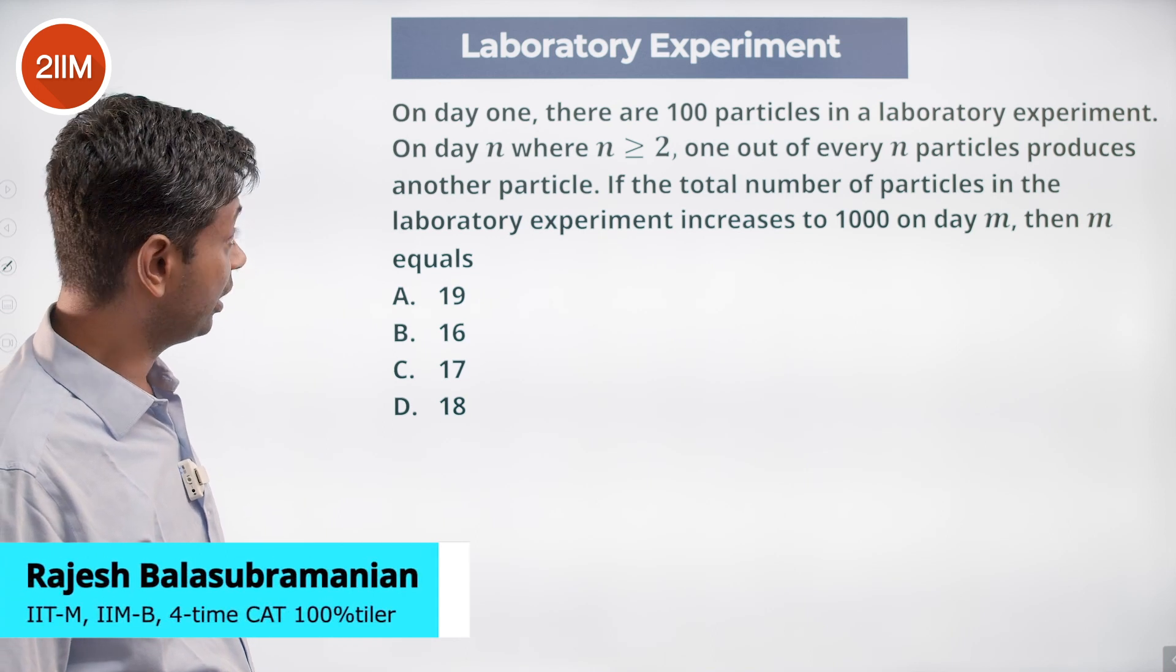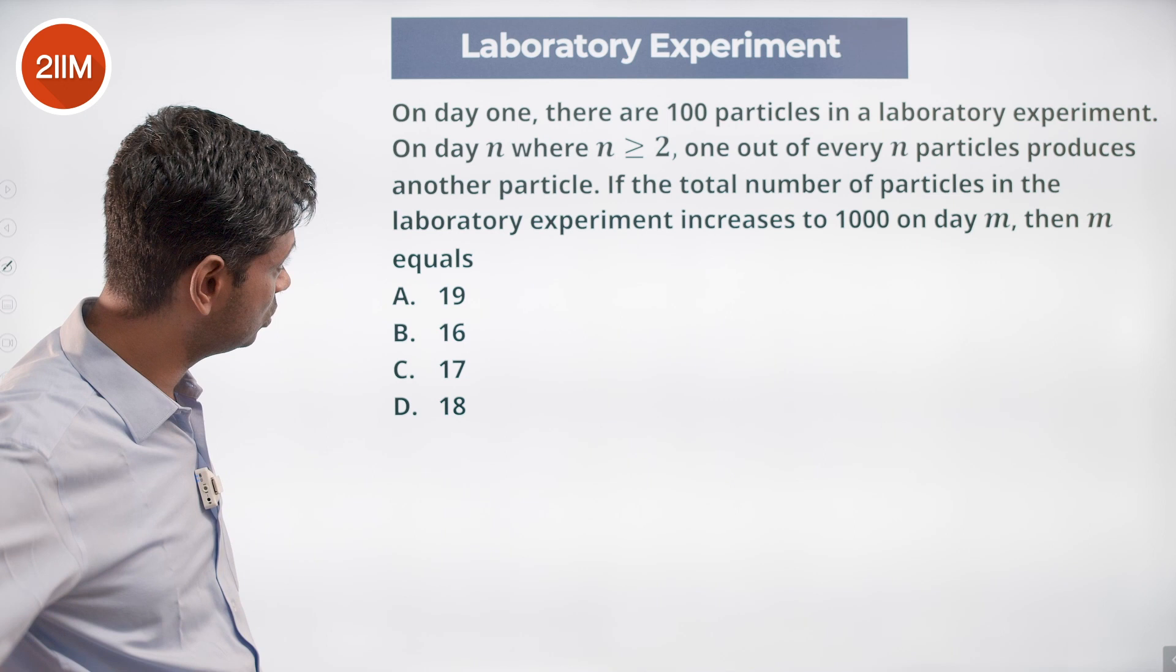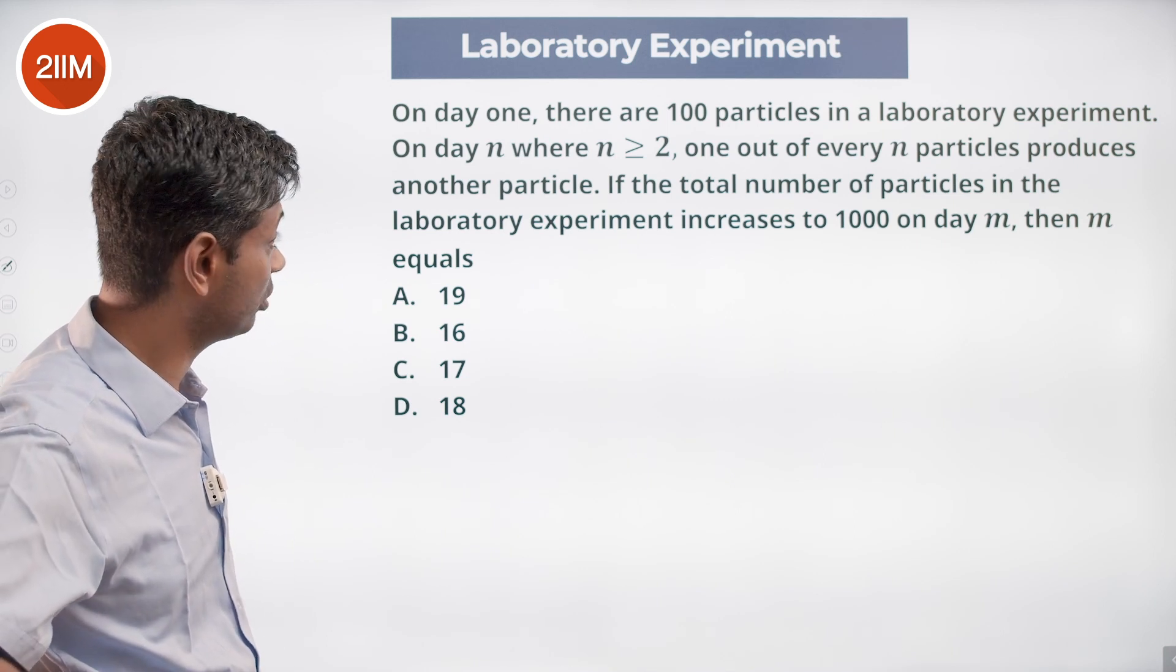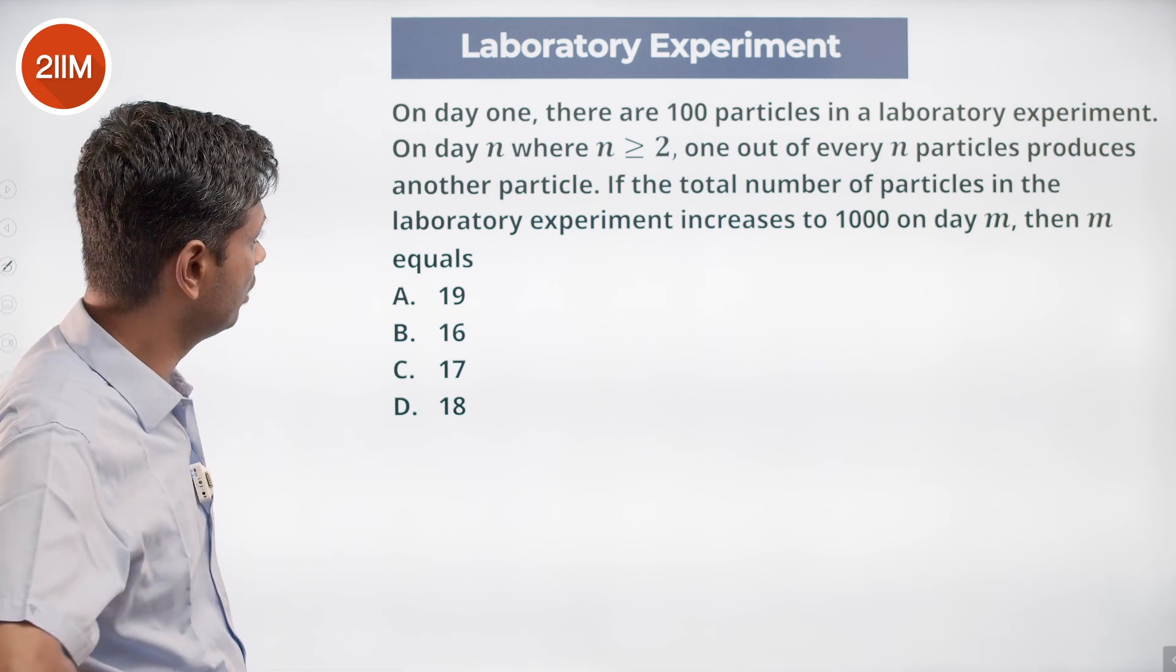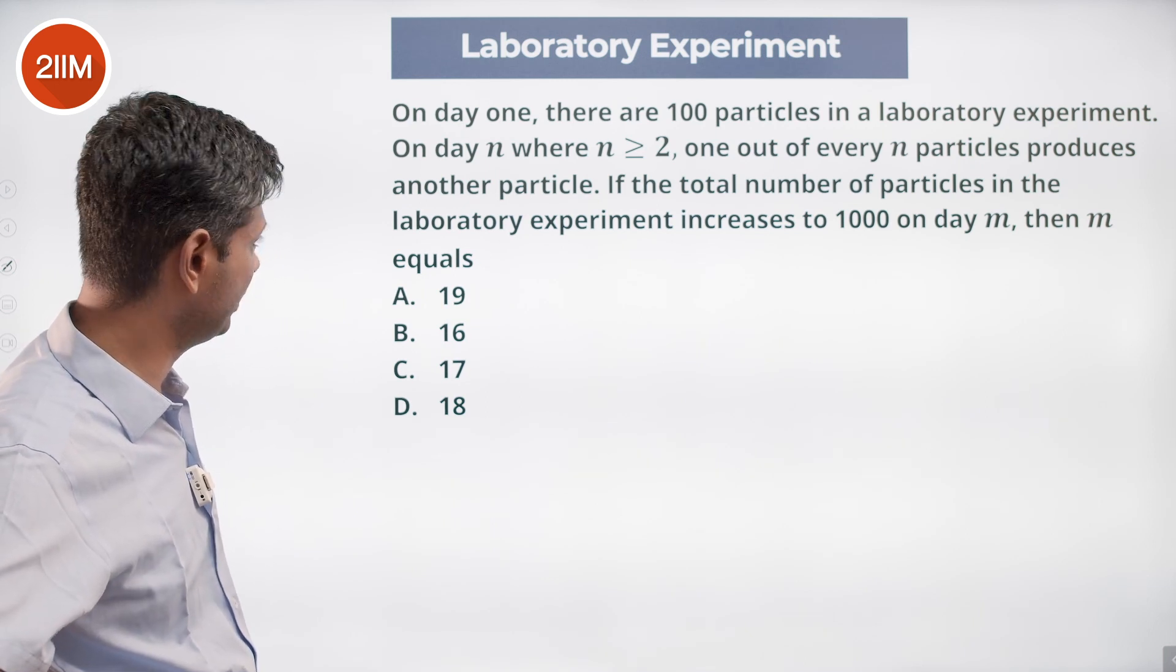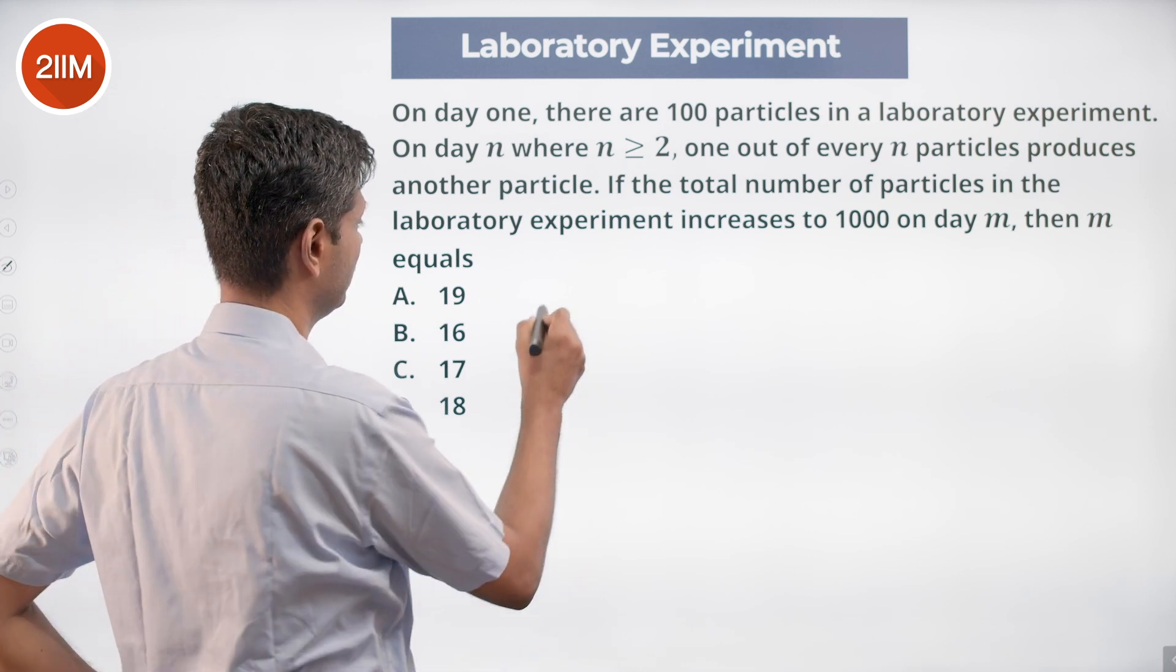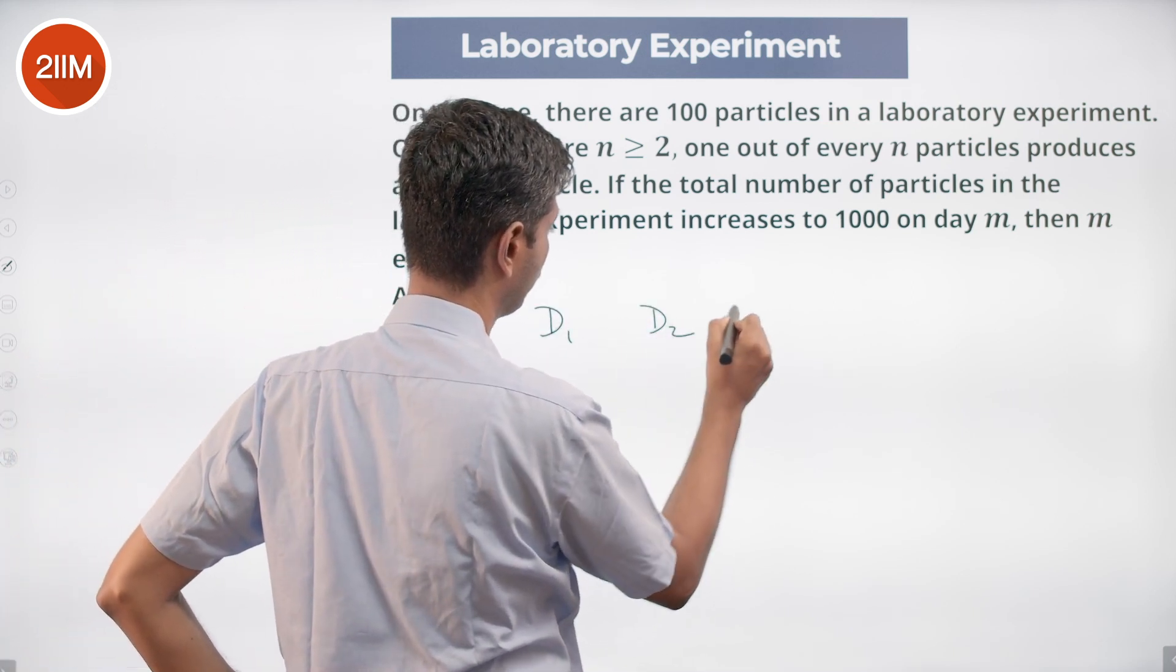On day one, there are 100 particles in a laboratory experiment. On day n, where n is greater than or equal to two, one out of every n particles produces another particle. If the total number of particles in the lab experiment increases to 1000 on day m, then m equals what? Let's look at day one, day two, day three, day four, up to day m.